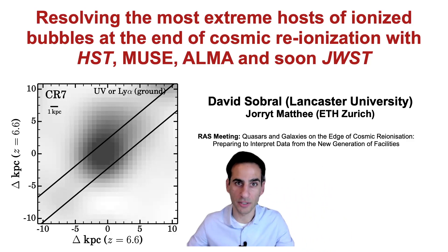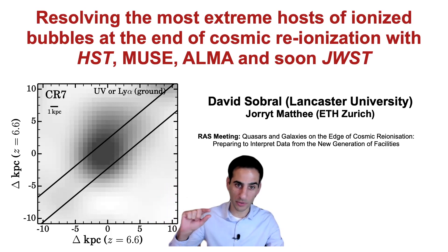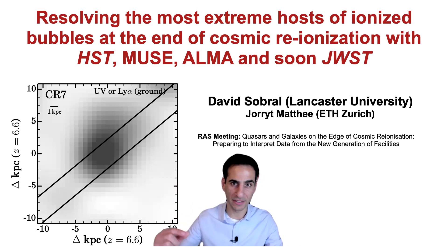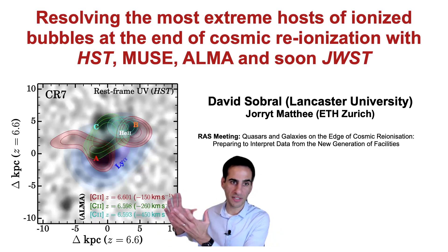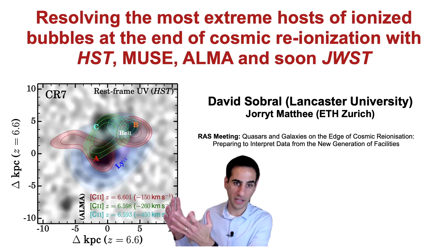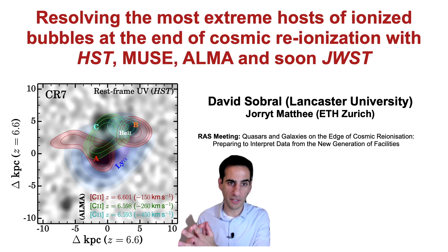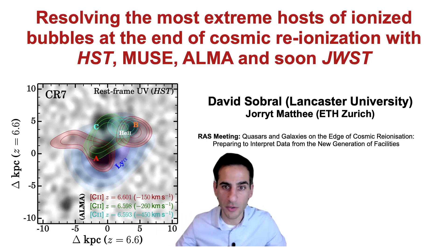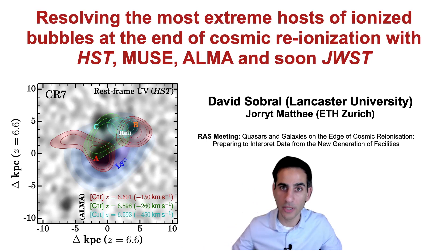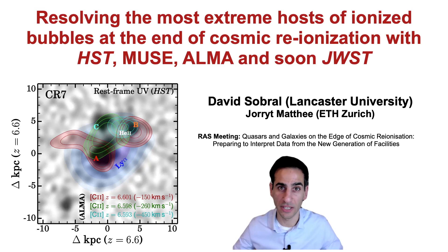In simple terms, my talk is about how we can go from blobology — where we would only place a slit and get a single answer for a source — to actually resolving sources like CR7 by using ALMA to look at C2, MUSE to look at Lyman-alpha, Hubble to look at rest-frame UV, and hopefully very soon James Webb to look at rest-frame optical lines.